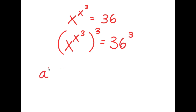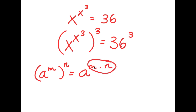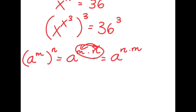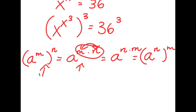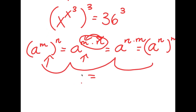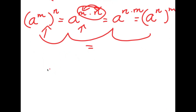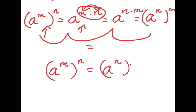Now, if I have something in the form a to the power of m to the power of n, this is equal to a to the power of m times n. For multiplication I can switch the places of these two numbers, so this is the same as a to the power of n times m. And if I have a to the power of m times n, this equals a to the power of m to the power of n, which means a to the power of n times m equals a to the power of n to the power of n. So all four are equal, meaning a to the power of m to the power of n is the same as a to the power of n to the power of m.